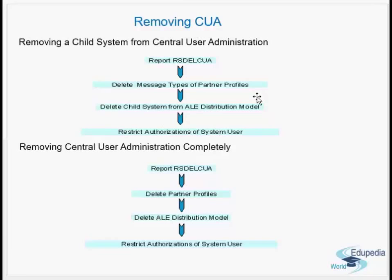It works on the ALE distribution model. The data is exchanged in terms of partner profiles, so you delete the corresponding partner profiles of that child system. You run this report in the CUA system, delete the corresponding partner profiles, delete that particular ALE distribution model, and restrict authorizations of the system user — the user used in the RFC. You modify the authorization so that the CUA will not work for that child system.